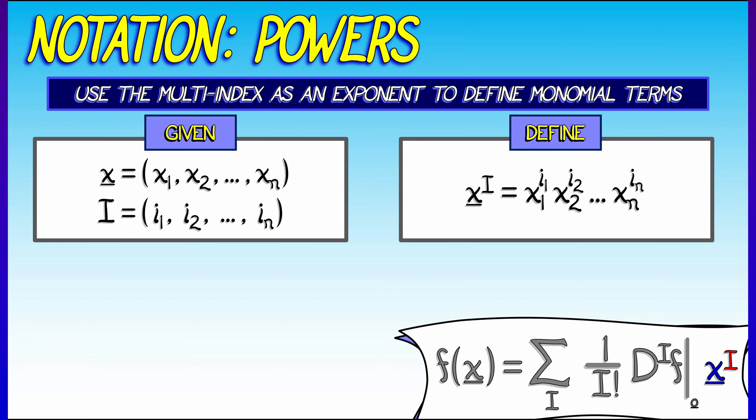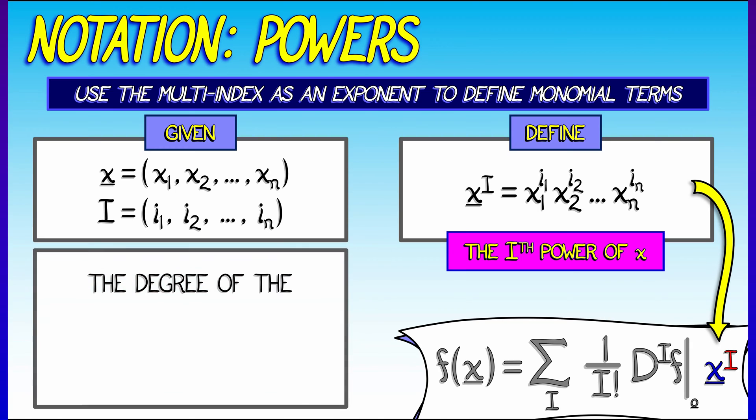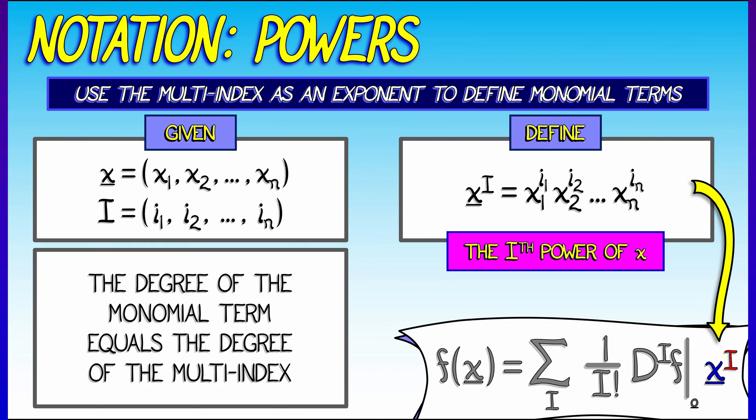then we're going to say that x to the i is really x1 to the i1 times x2 to the i2, all the way up through xn to the i_n, and that's the i-th power of x. That's what that term in the Taylor series formula really means. Now, the degree of that monomial term is simply the degree of the multi-index, the sum of the component indices.